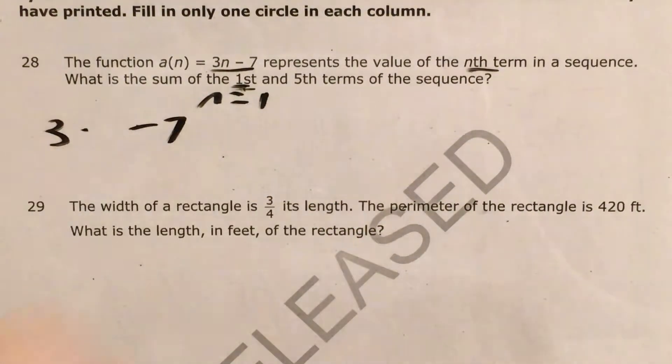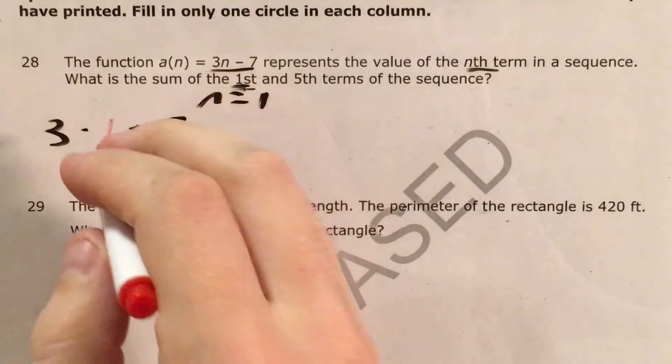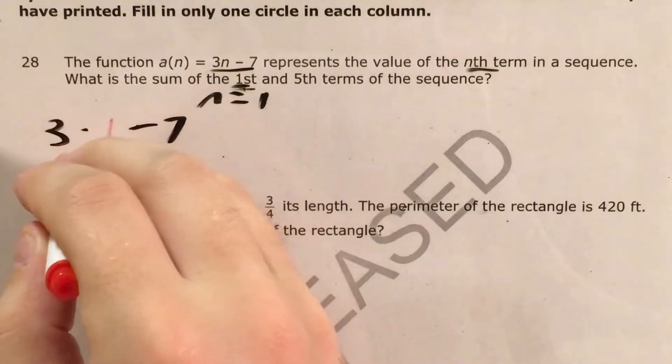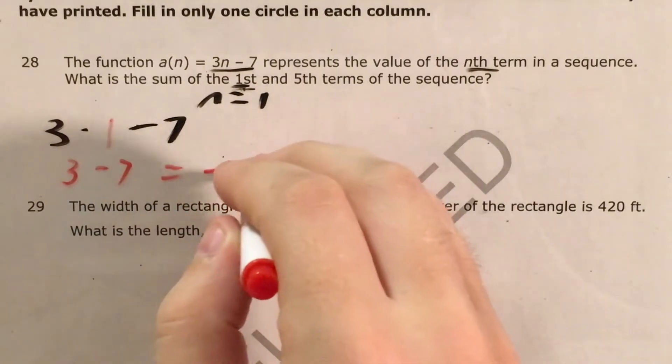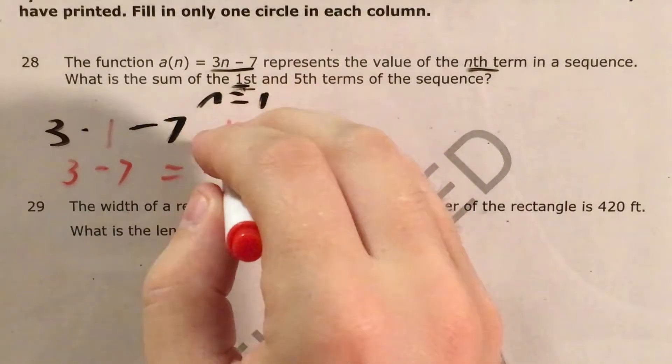then all I'm going to do is plug in 1 for n, figure out that 3 times 1 is 3 minus 7, and that gets me negative 4. So my first term is negative 4,